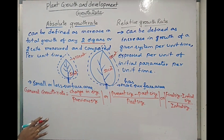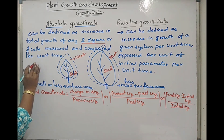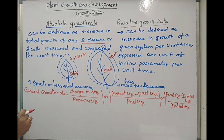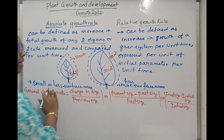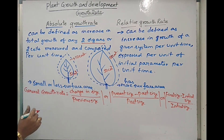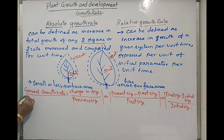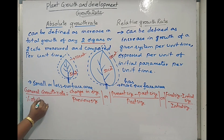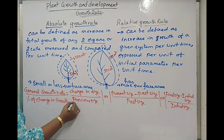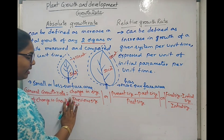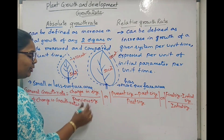Though we use any type of wording, the meaning will be the same. We will calculate the absolute growth rate for both leaves and later calculate the relative growth rates. This is the general formula to calculate growth rate. If we want to calculate the percentage of change in growth rate, it can be calculated as change in size divided by previous size, multiplied by 100.